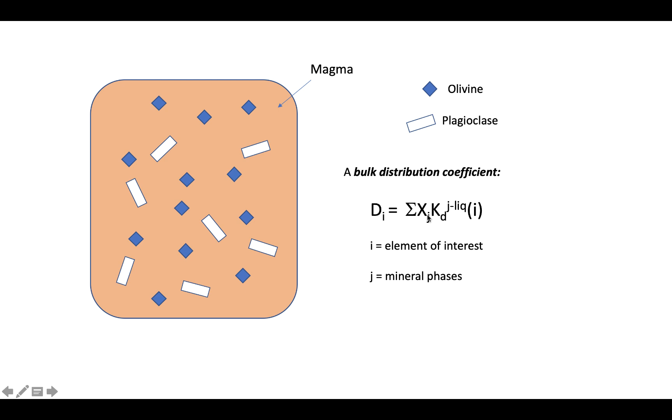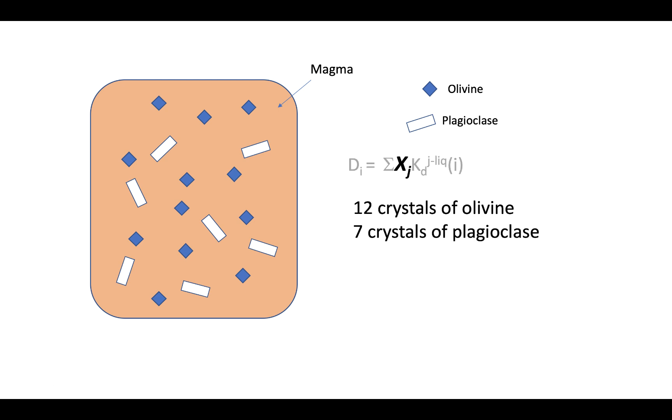We're going to go back to the examples of olivine and plagioclase and nickel and calcium. The first thing we're going to look at is this value Xj. So Xj is the amount of any individual phase. In this case, I've drawn 12 crystals of olivine and 7 crystals of plagioclase. They're not exactly the same size, but let's say they are, because this is really a volumetric proportion. So if they're taking up the same amount of space, we can write the fraction of olivine.